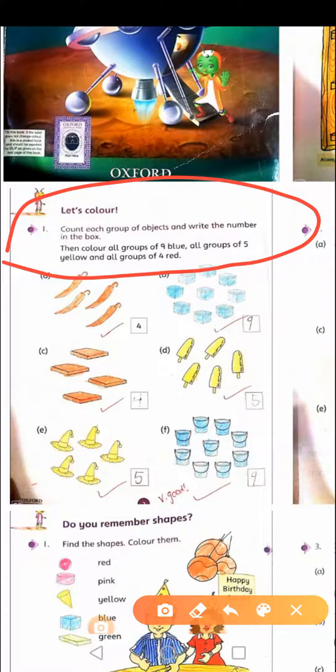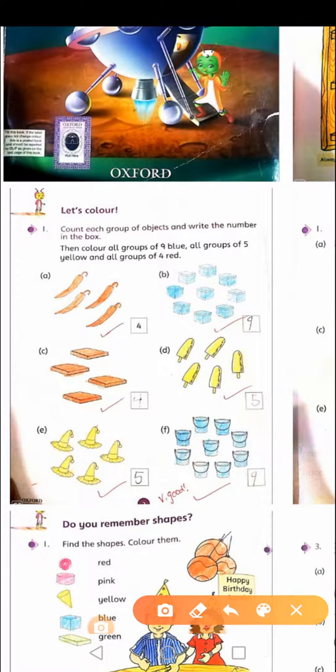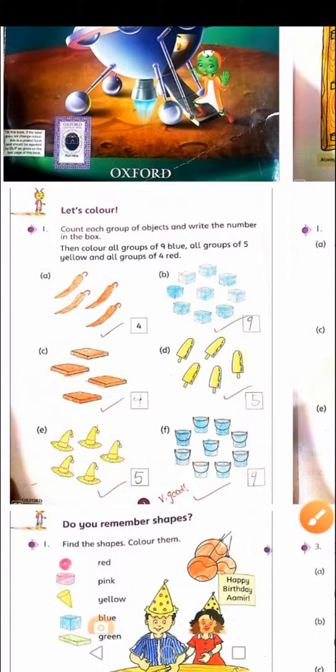All groups of nine blue, all groups of five yellow, and all groups of four red. They have asked to count and write numbers according to the given color code. This question revises counting, writing numbers, and color recognition.